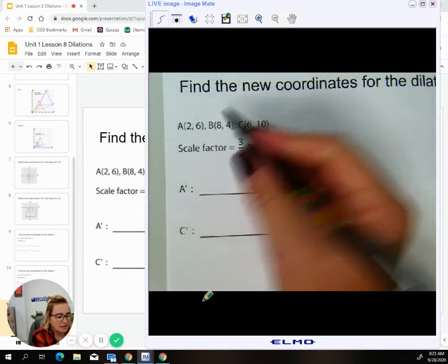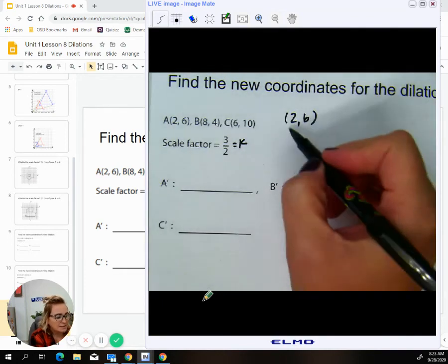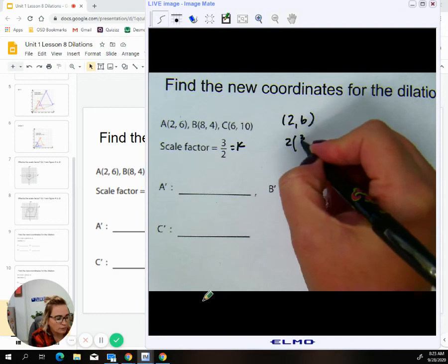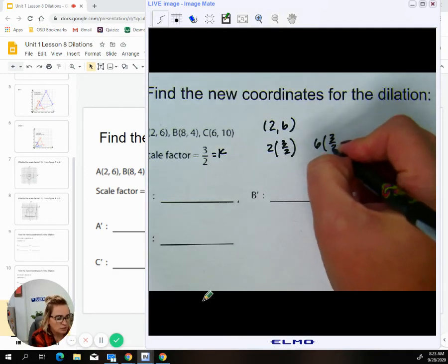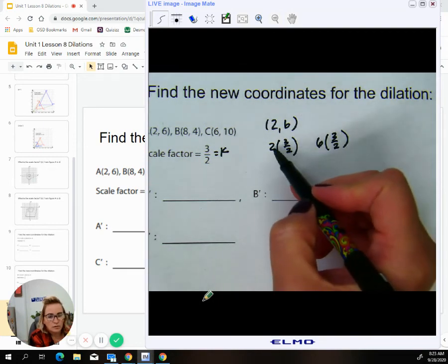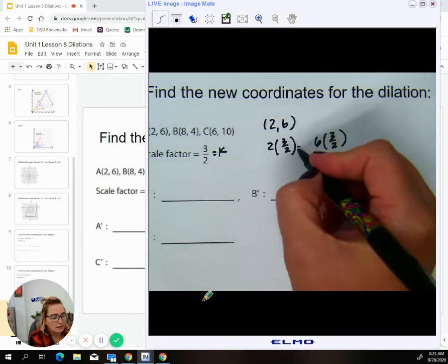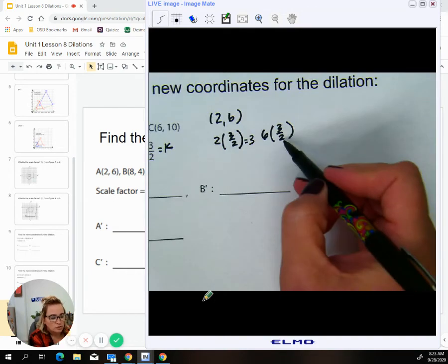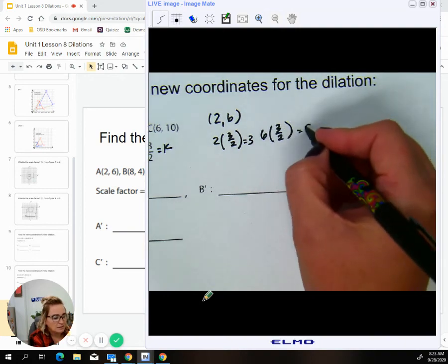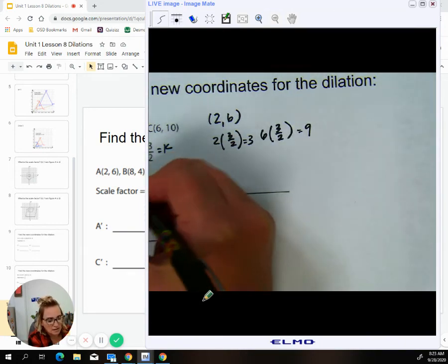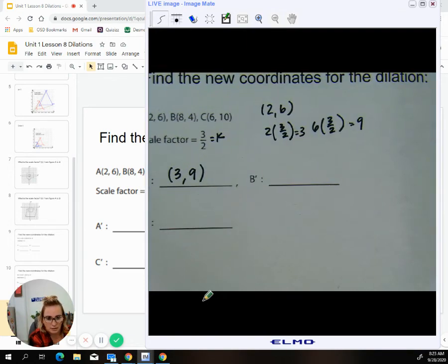So if I take this first point of two, six, and I times two by three over two, and I times six by three over two, you would say two goes into two one time, one times three is three. Two goes into six three times, three times three is nine, which tells us that our new point is three, nine.